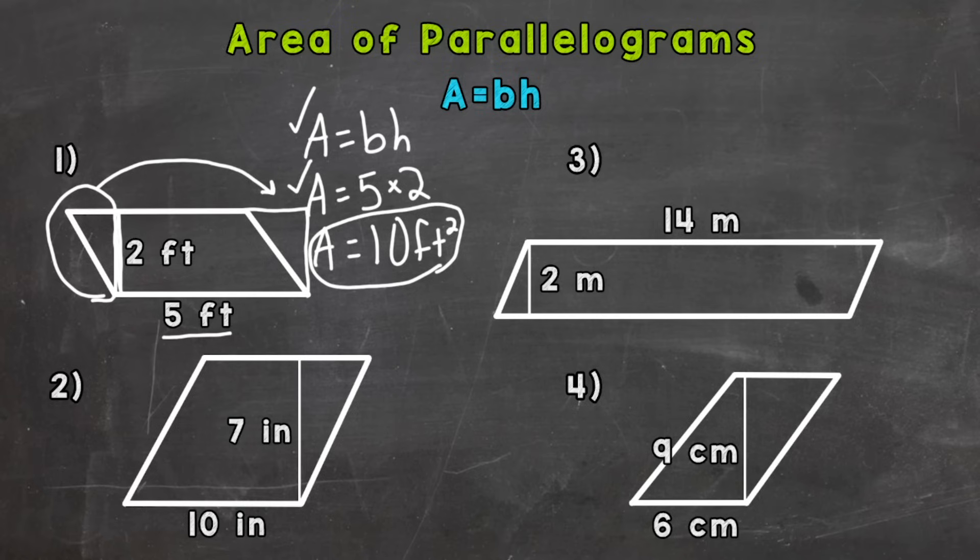So number two, let's write out our formula. Area equals base times height. We will plug in the base of ten times the height of seven. Again, this line here is not part of the shape. It's just there to represent that seven inches. So we get an area of 70 square inches.